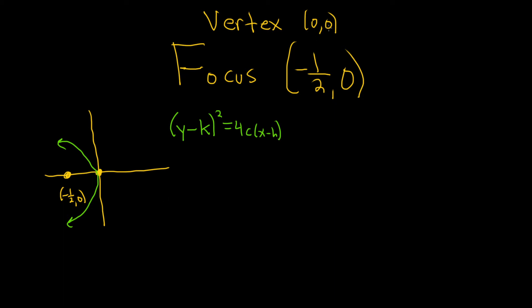So we have our vertex (0,0). That's our h and k. So we can go ahead and plug those in. So we have (y - 0)² = 4c(x - 0). So this would be y² = 4cx.